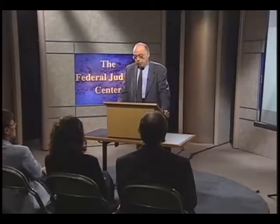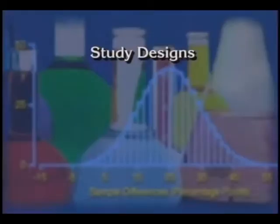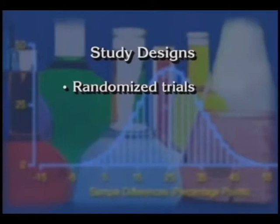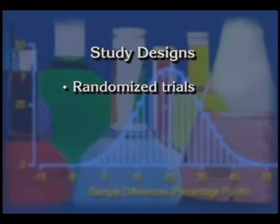So what we've seen up to now is basically three major types of study design used in epidemiologic studies: randomized trials, generally not used for putatively toxic agents, and case-control or cohort studies, which are used to explore the relationships of exposure to a specific disease.